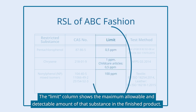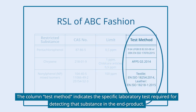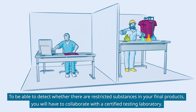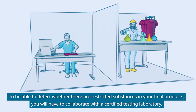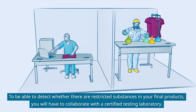The Limit column shows the maximum allowable and detectable amount of that substance in the finished product. Some substances are completely banned and are not allowed to be found in the end product at all. The column Test Method indicates the specific laboratory test required for detecting that substance in the end product. To be able to detect whether there are restricted substances in your final products, you will have to collaborate with a certified testing laboratory.